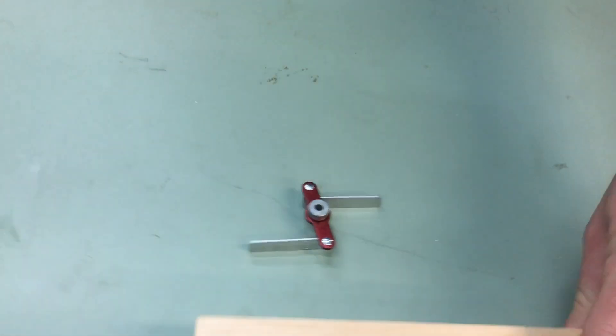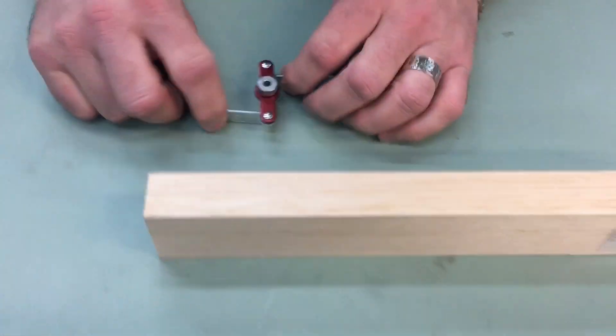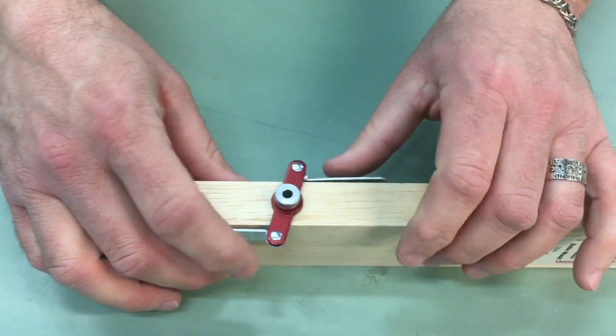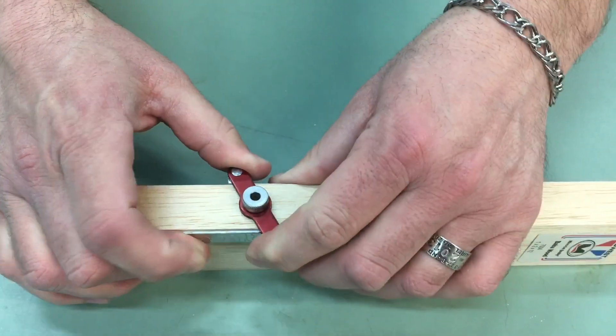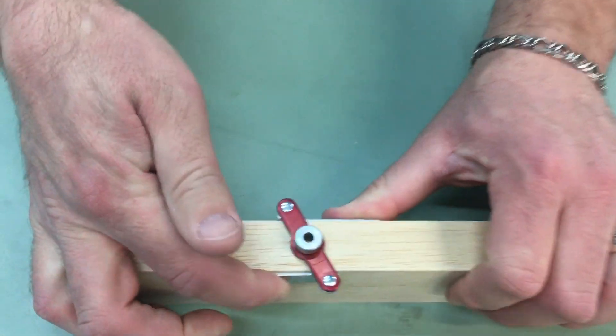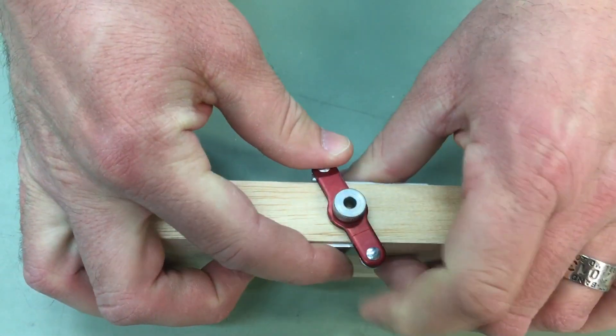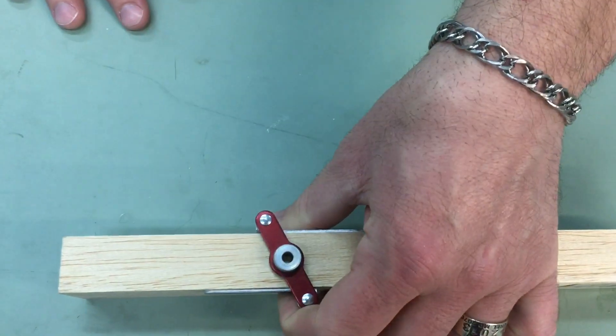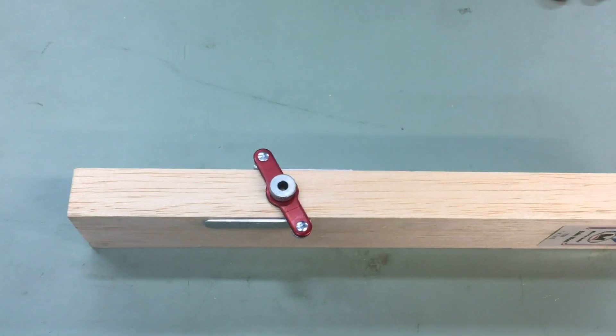And now you take a block of wood and you take your wings and you tighten them up. You push them towards each other and now this bushing is centered in that block of wood.